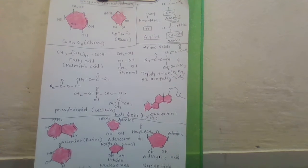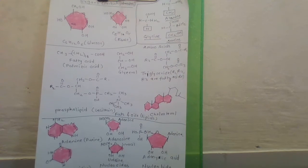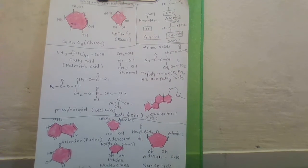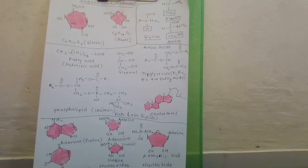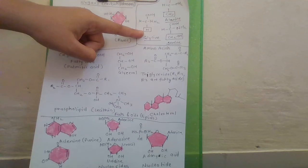Those which occur in proteins are only of 20 types. The R groups in these proteinaceous amino acids could be hydrogen. Here if hydrogen is there then it is called glycine.